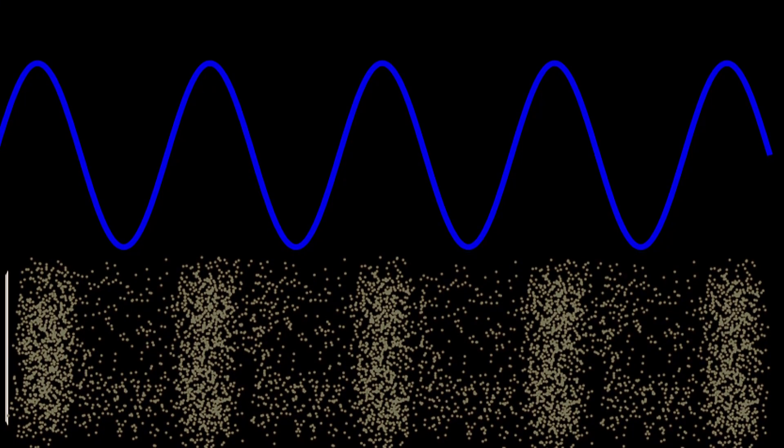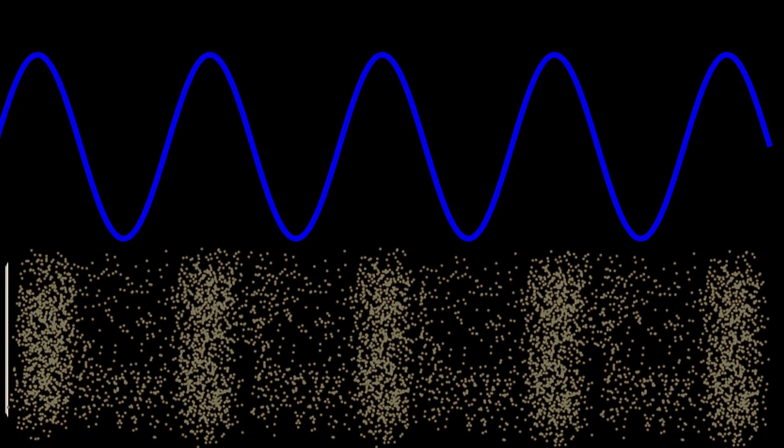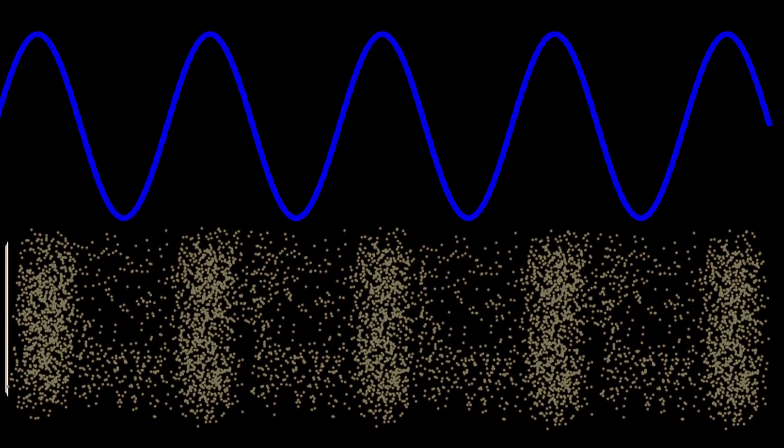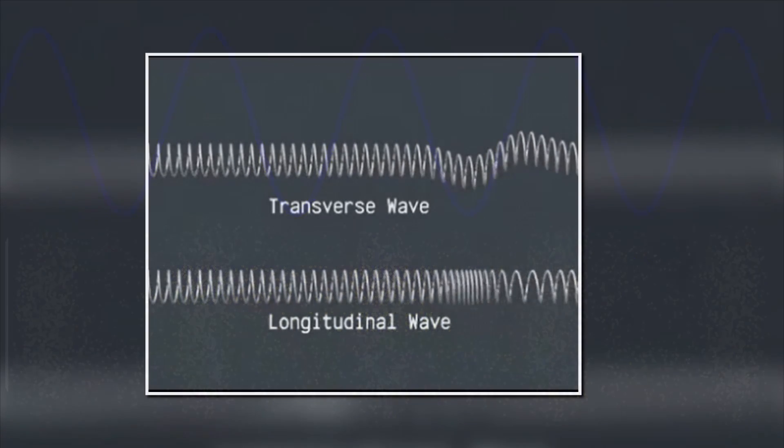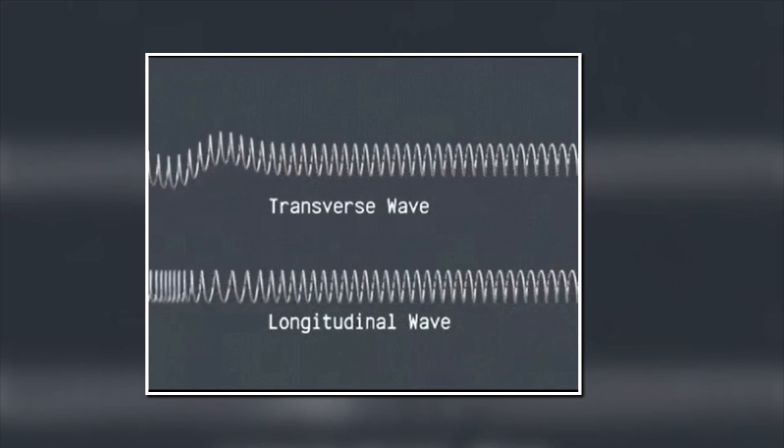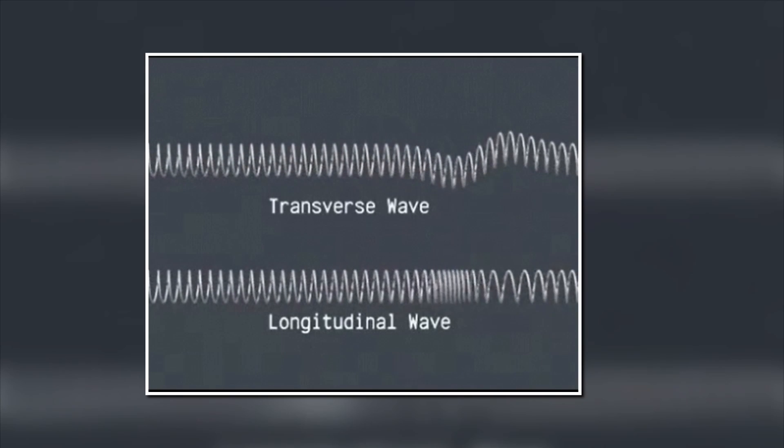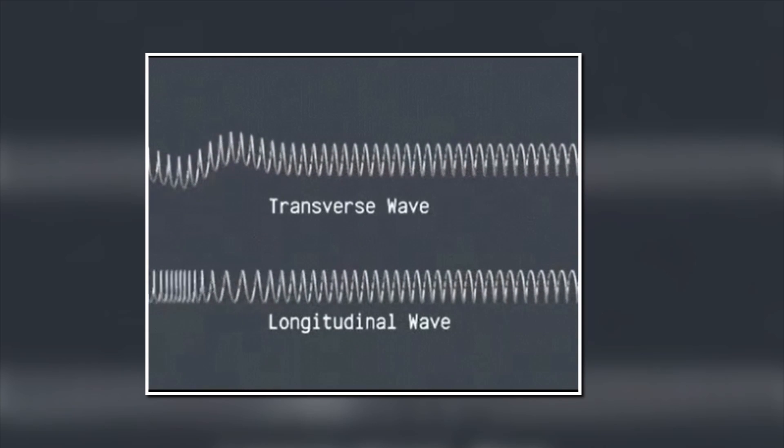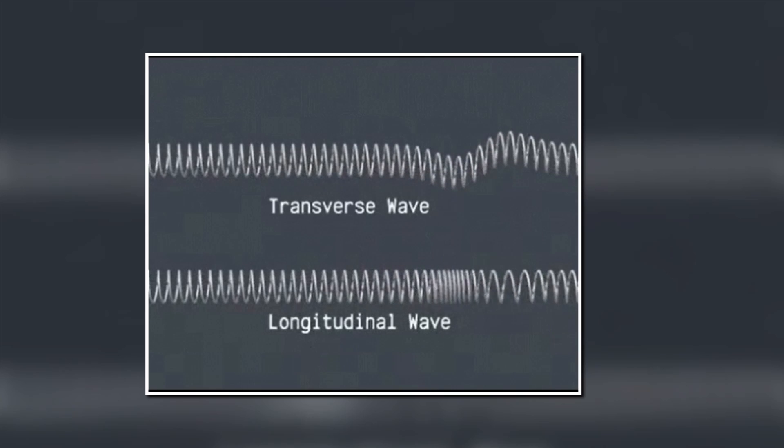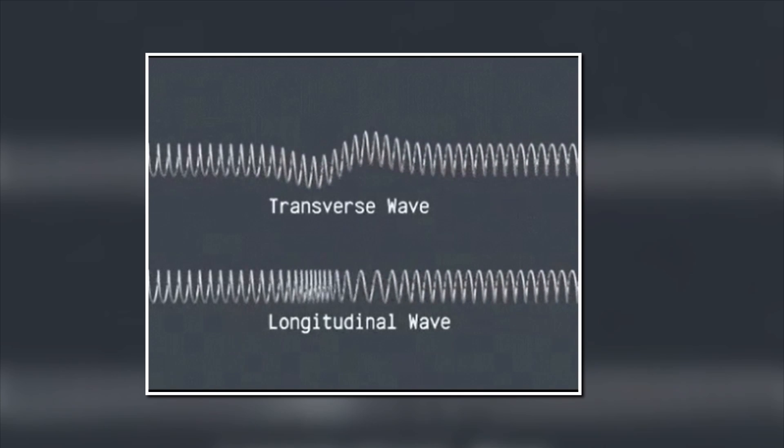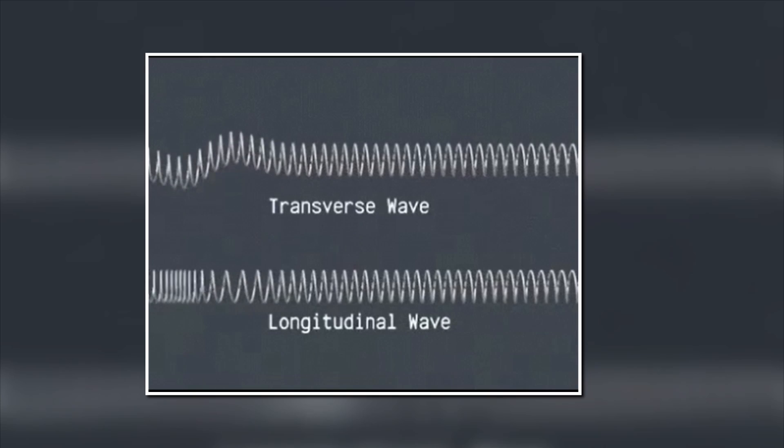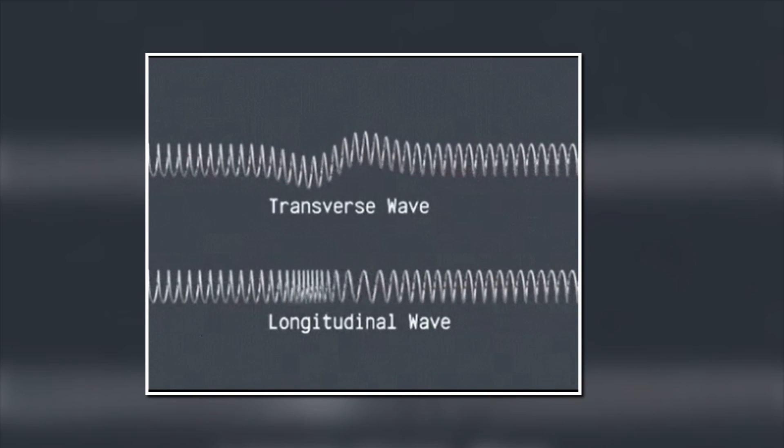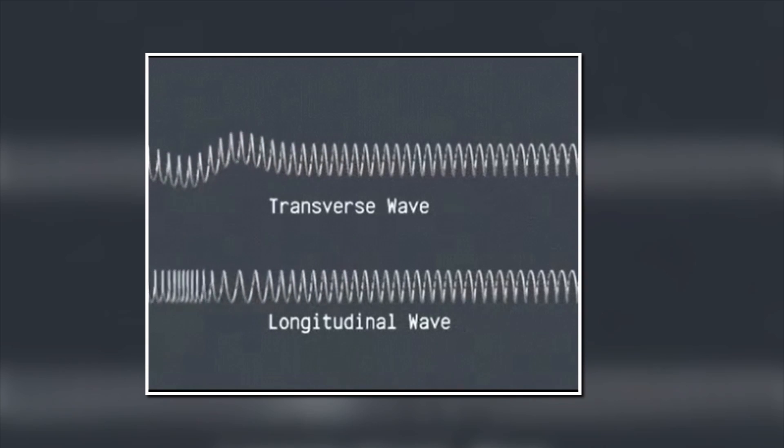Waves in general are of two types, transverse and longitudinal. So, sound waves can also be of two types, transverse sound waves and longitudinal sound waves. We won't go into the details of waves physics today, but remember one key difference between transverse and longitudinal waves, transverse waves can only travel through materials that have elasticity such as solids and liquids,